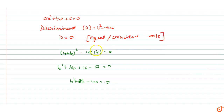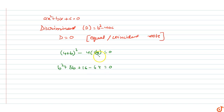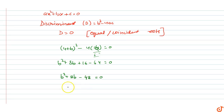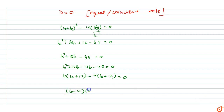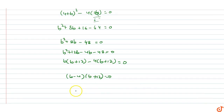So B squared + 8B minus 48 equals 0. Factoring: (B + 12)(B minus 4) equals 0, which gives B equals 4 or B equals minus 12.